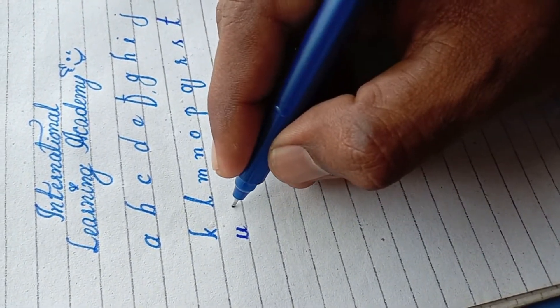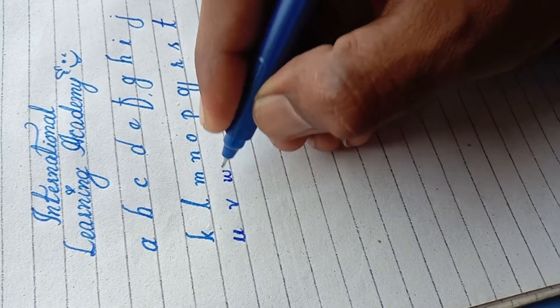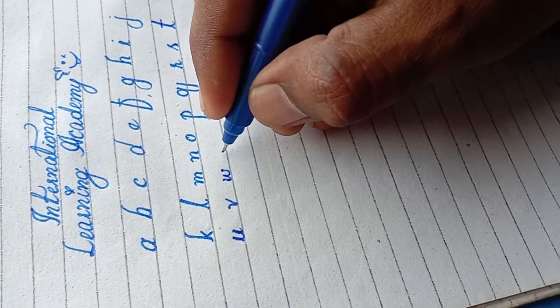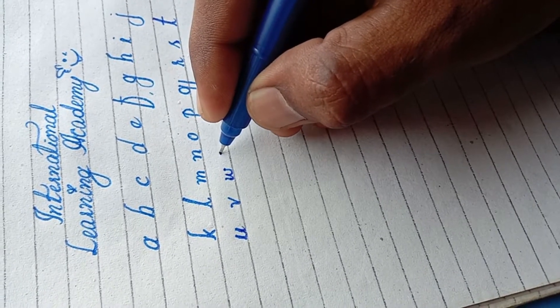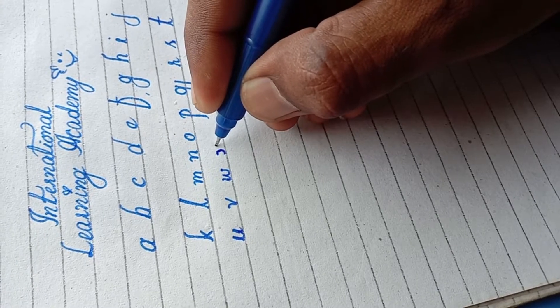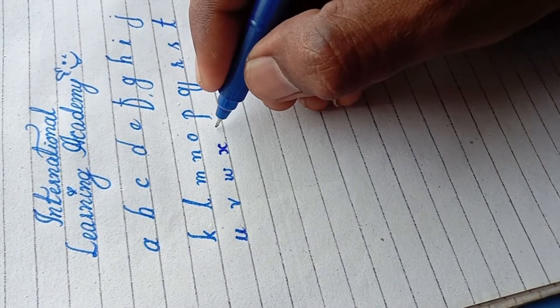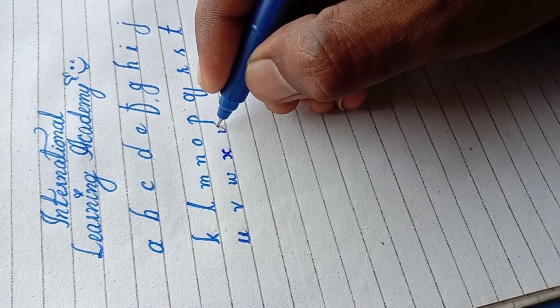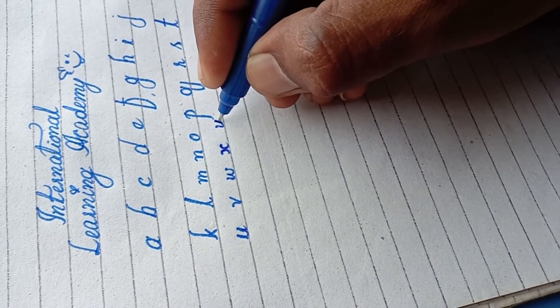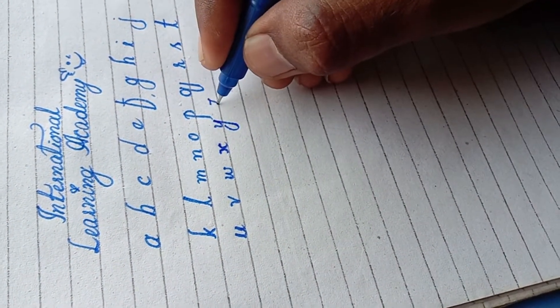Letter U like that. Small V. Letter W like that. Letter X - we draw opposite C and insert or combine, this is X. And Y - we make a small U and add this. This is our small Y. Letter Z.